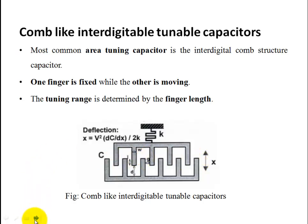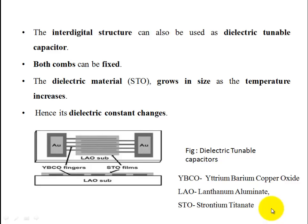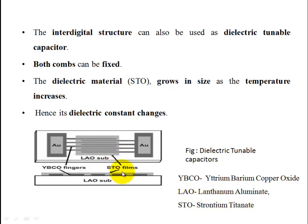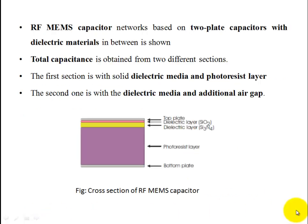The third classification is the Dielectric Tunable Capacitor. Both comb-like structures are fixed. The dielectric material used is STO (strontium titanate), which is a ferroelectric-type material. As temperature increases, the size increases, and as a result the dielectric constant changes.